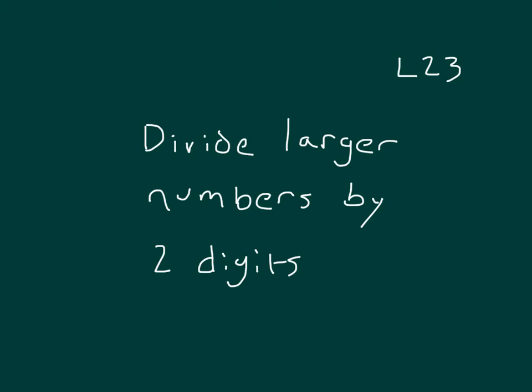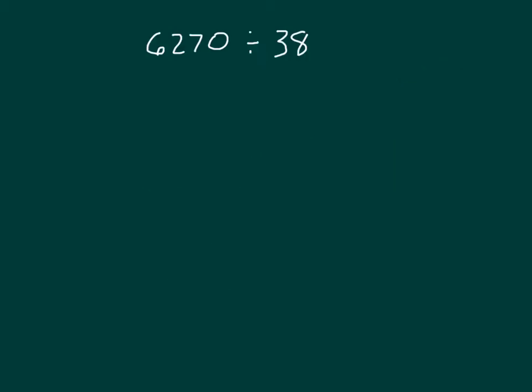Here's lesson 23. Here we're dividing 6,270 by 38. If we set that up, that would be 6,270 divided by 38.